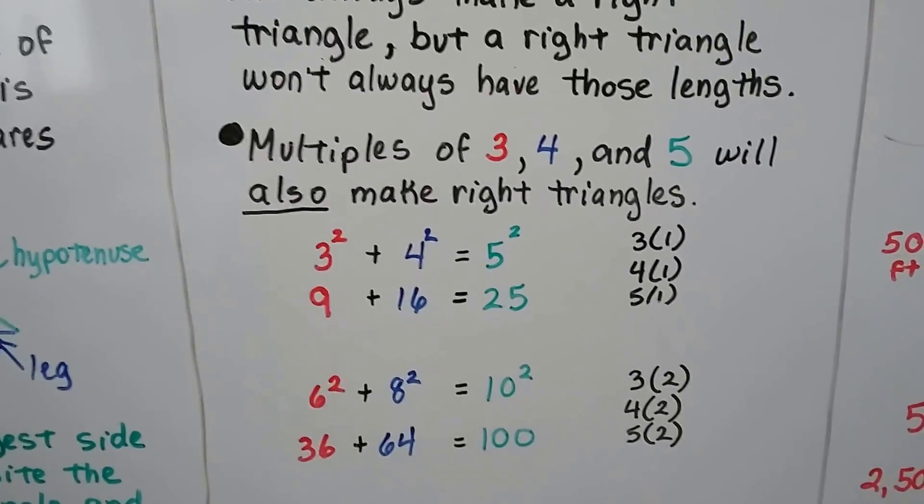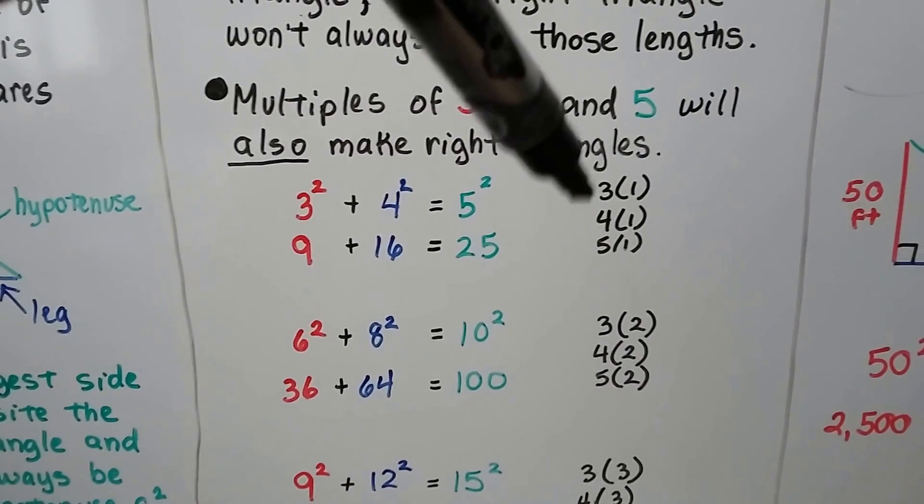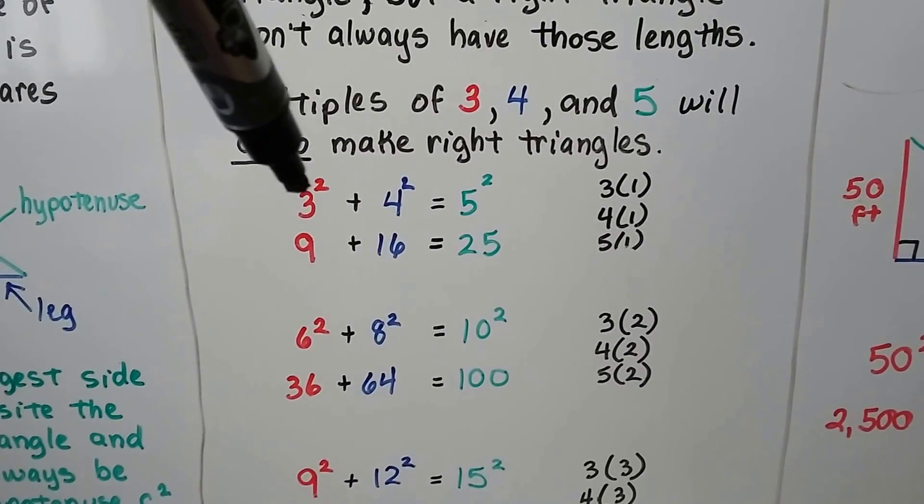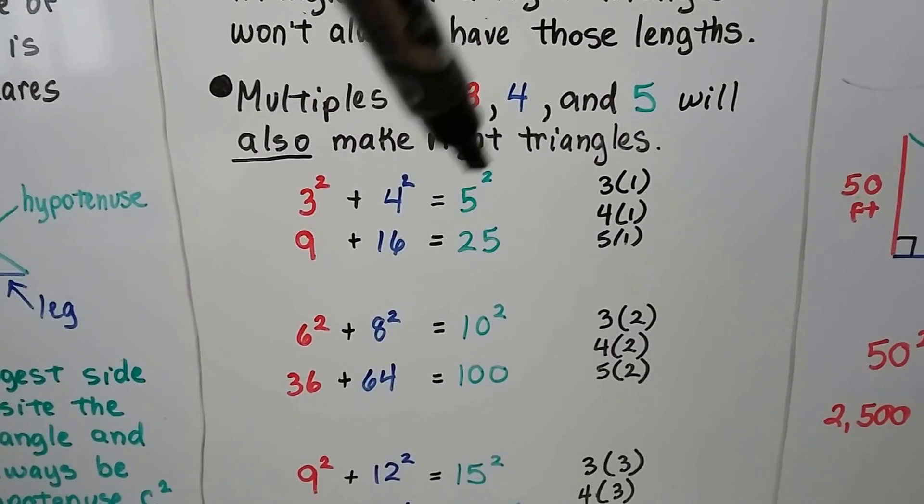And multiples of 3, 4, and 5 will also make right triangles. So, if we have 3, 4, and 5, and we multiply it by 1, that gives us the 3. And then we square it, plus the 4, and we square it, plus the 5, and we square it.